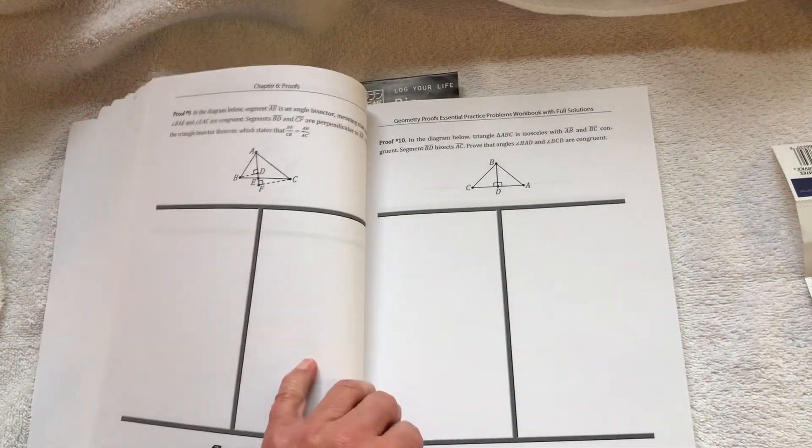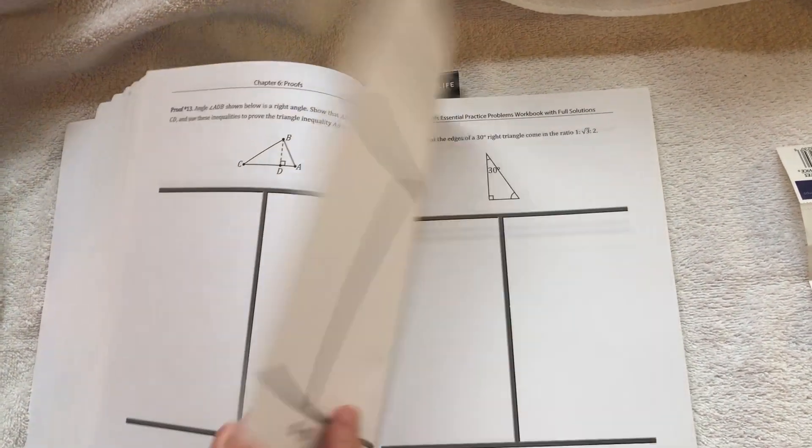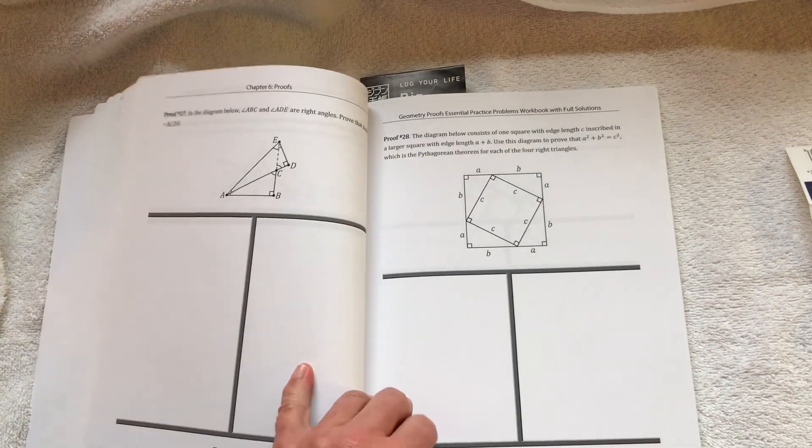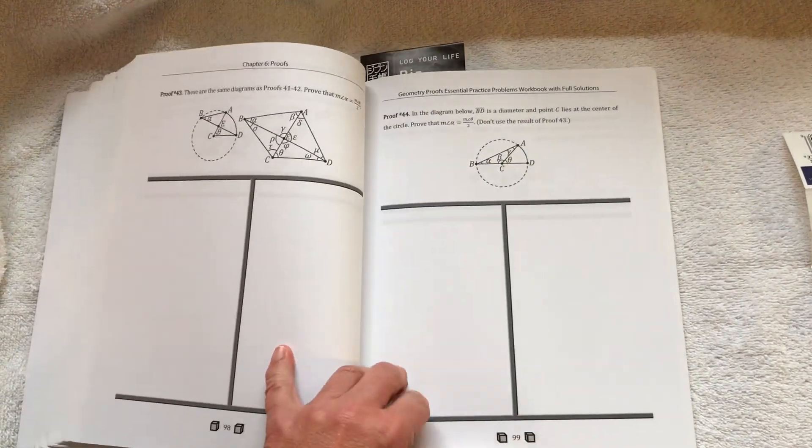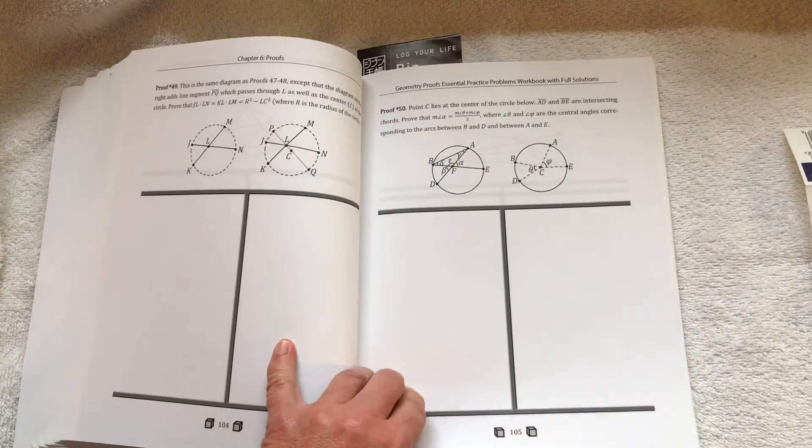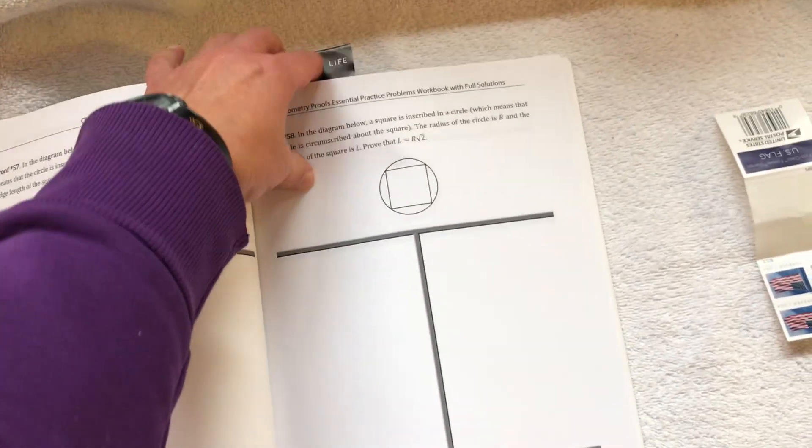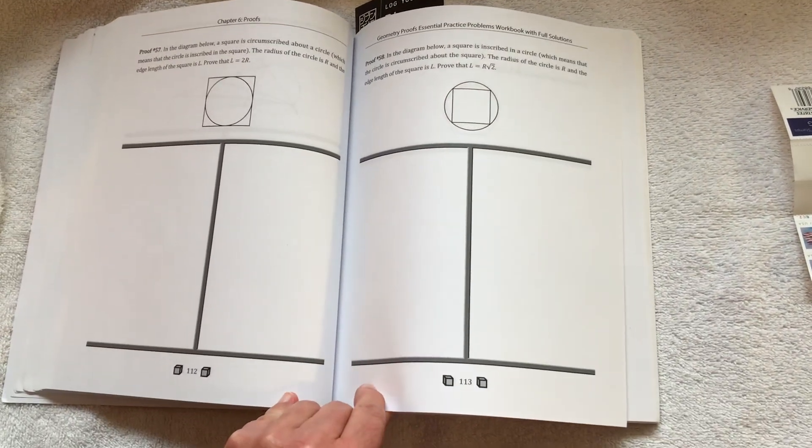And then they just keep getting harder. Circles. Anyways, I'd say the middle third of the book is the actual proofs.